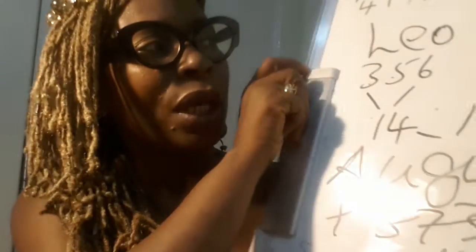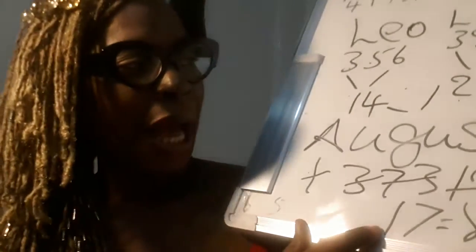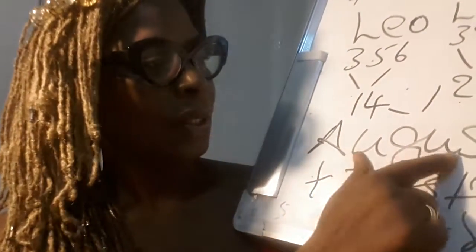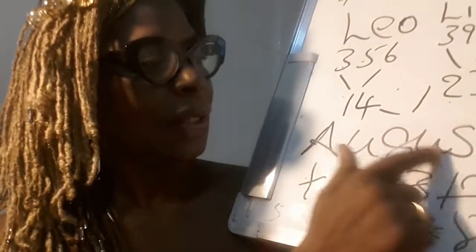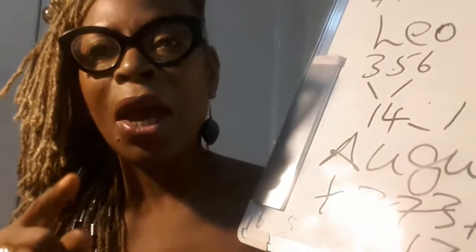I'm almost tempted to say it might have been in the month of August that Mother Eve ate of the fruit of good and evil. The month of August consists of six letters, and it also has two U's — this is really amazing.